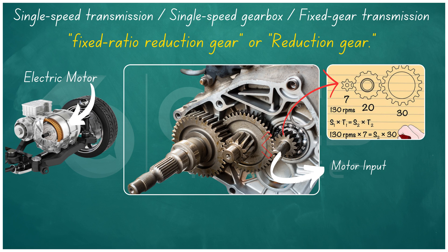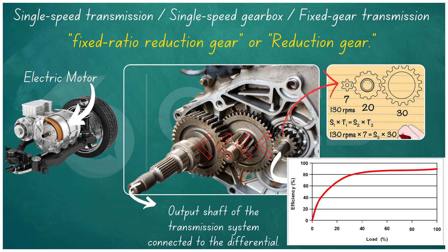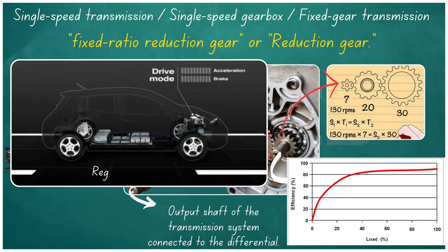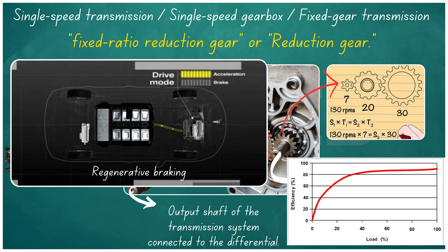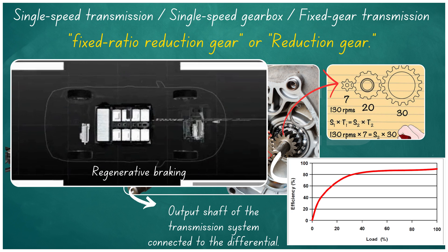This gear ratio serves as a reduction gap, ensuring smooth and efficient acceleration from a standstill and maintaining higher speeds on the highway. The fixed gear ratio is chosen to match the motor's efficiency curve, ensuring the motor operates efficiently across a wide range of speeds. In many electric vehicles, the single-speed transmission also plays a role in regenerative braking. When you lift your foot off the accelerator pedal, the electric motor can reverse its function, acting as a generator to recover energy and recharge the battery, and the single-speed transmission helps manage this process.